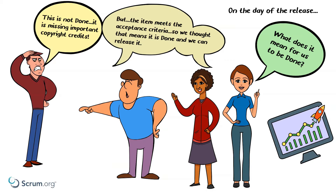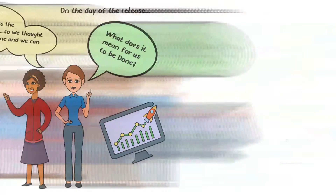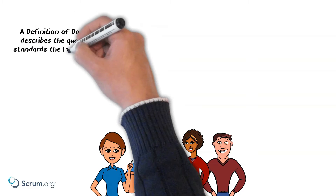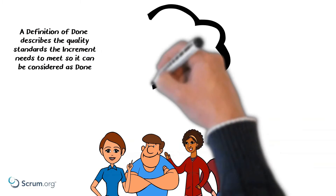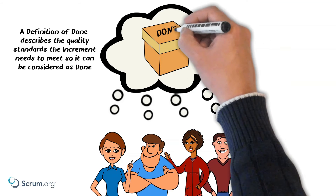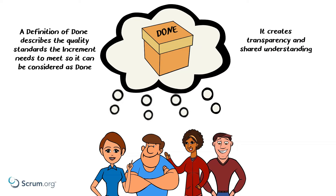Robin explains that the definition of done exists to avoid the situation the team is in from happening. It describes the quality standards the increment needs to meet for it to be considered done. This creates transparency — a real shared understanding of what it means to be done. Everyone in the team agrees that establishing a definition of done is a must, and Robin volunteers to facilitate.